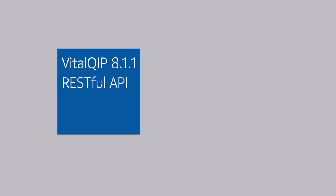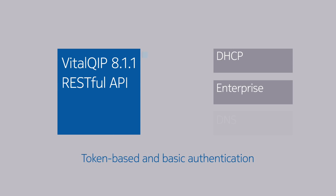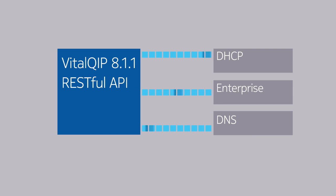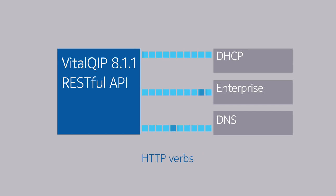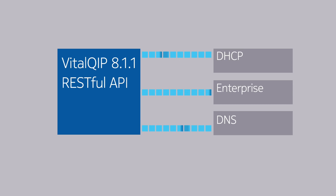The new Vital QIP RESTful API provides support for both token-based and basic authentication methods. The Vital QIP RESTful API supports both XML and JSON data types, utilizes HTTP verbs, and implements functions for IPv4 and IPv6 provisioning and management via RESTful API calls.